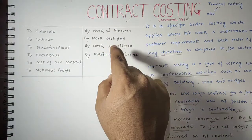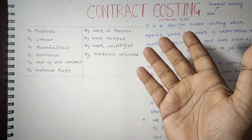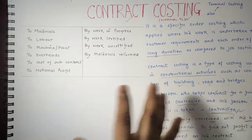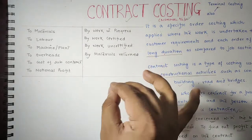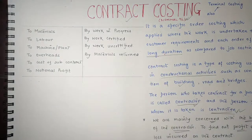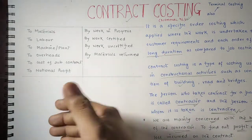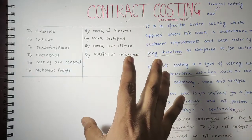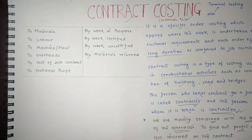Certified means the sales value of work completed as certified by the architect. Uncertified means the work which has been carried out by the contractor but has not yet been certified by the architect — it is complete work awaiting certification. When you do the practical examples, this will be much clearer. This is the normal format of contract costing.